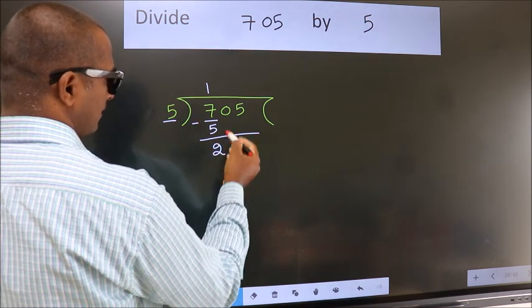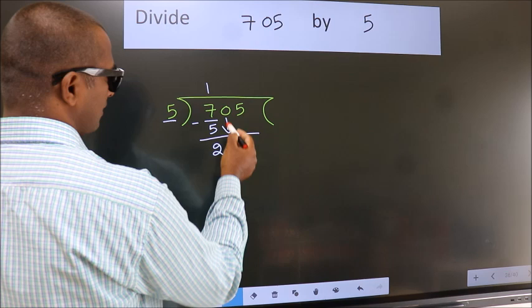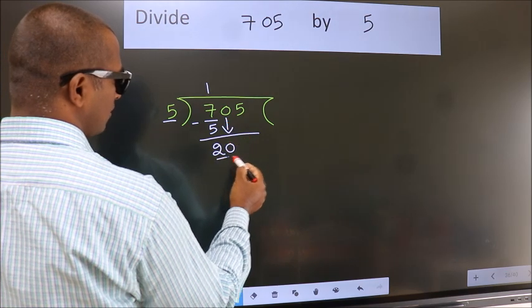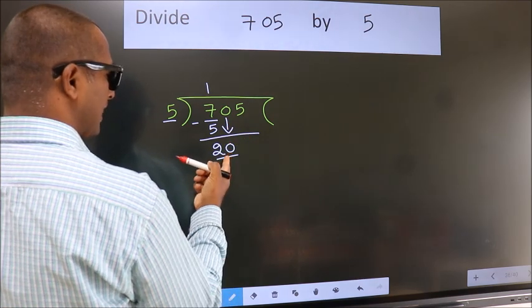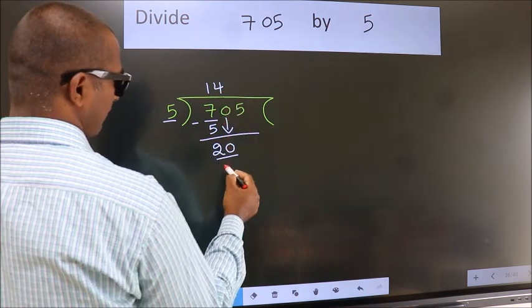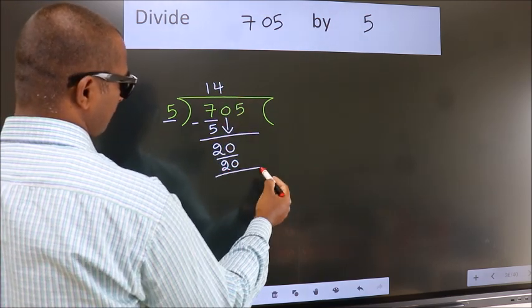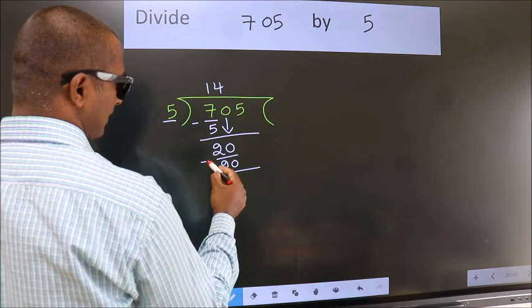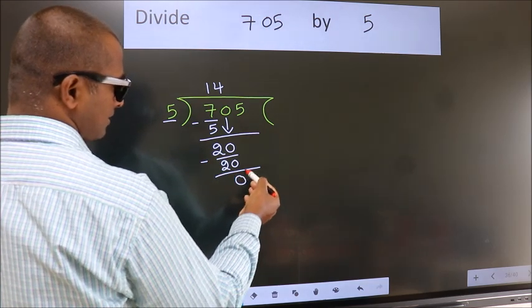After this, bring down the beside number. So, 0 down. So, 20. When do we get 20? In 5 table. 5 fours, 20. Now, we subtract. We get 0.